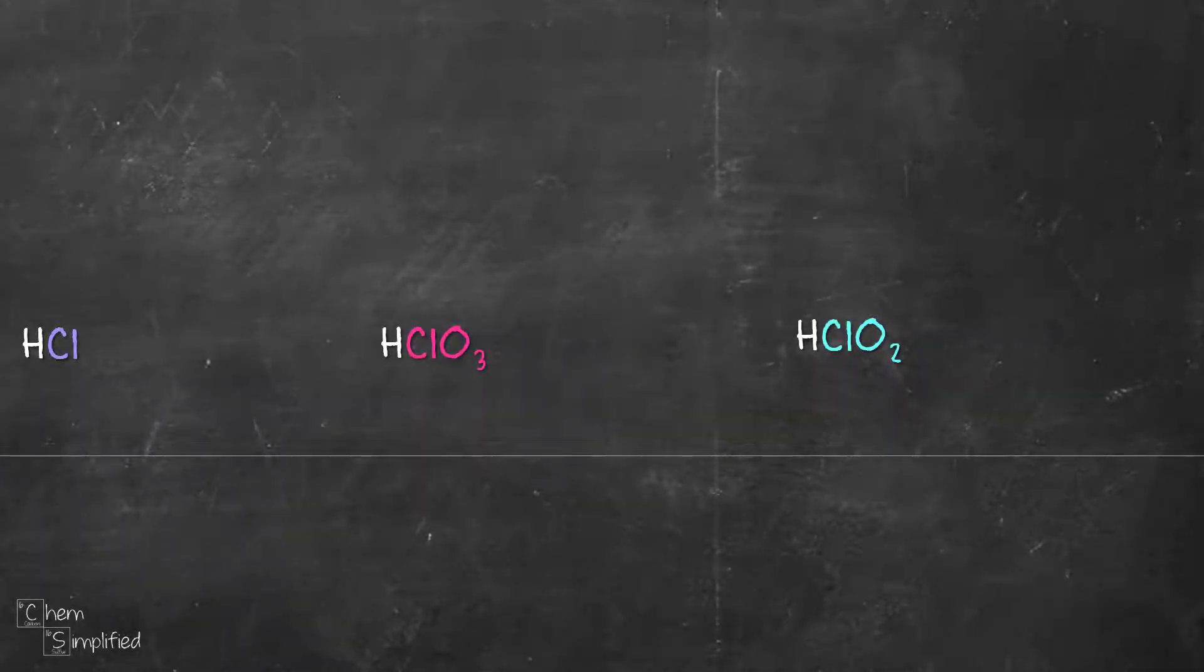We're going to look at how to name acids using these three examples: HCl, HClO3, and HClO2. HCl is an acid that doesn't contain oxygen, while HClO3 and HClO2 are acids that contain oxygen.